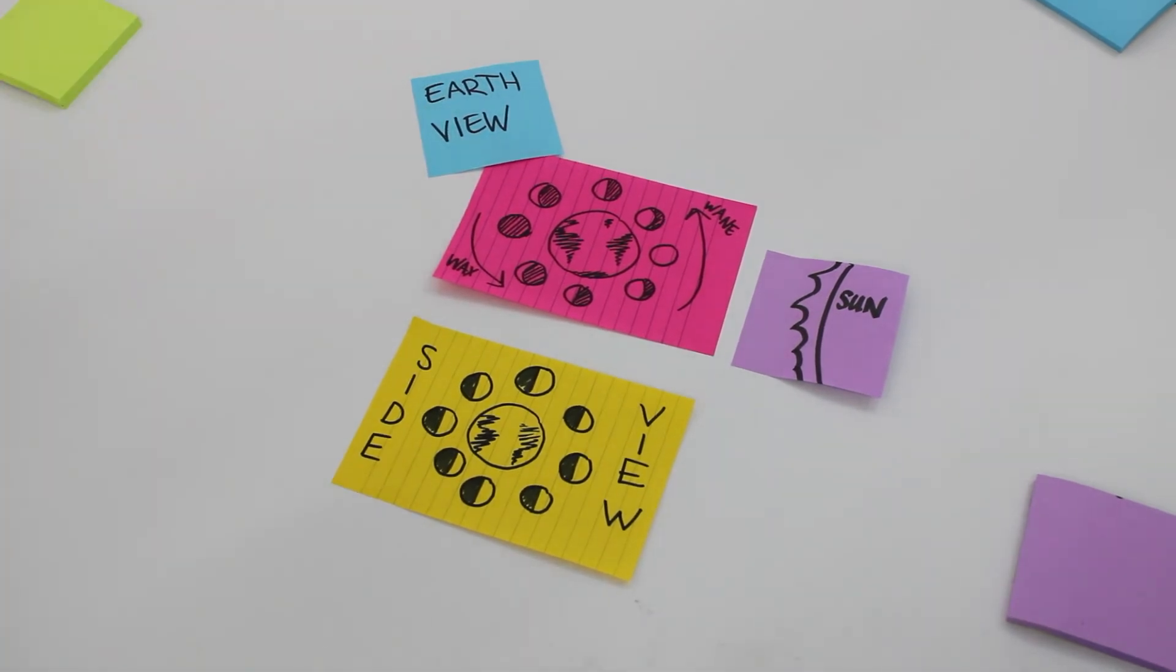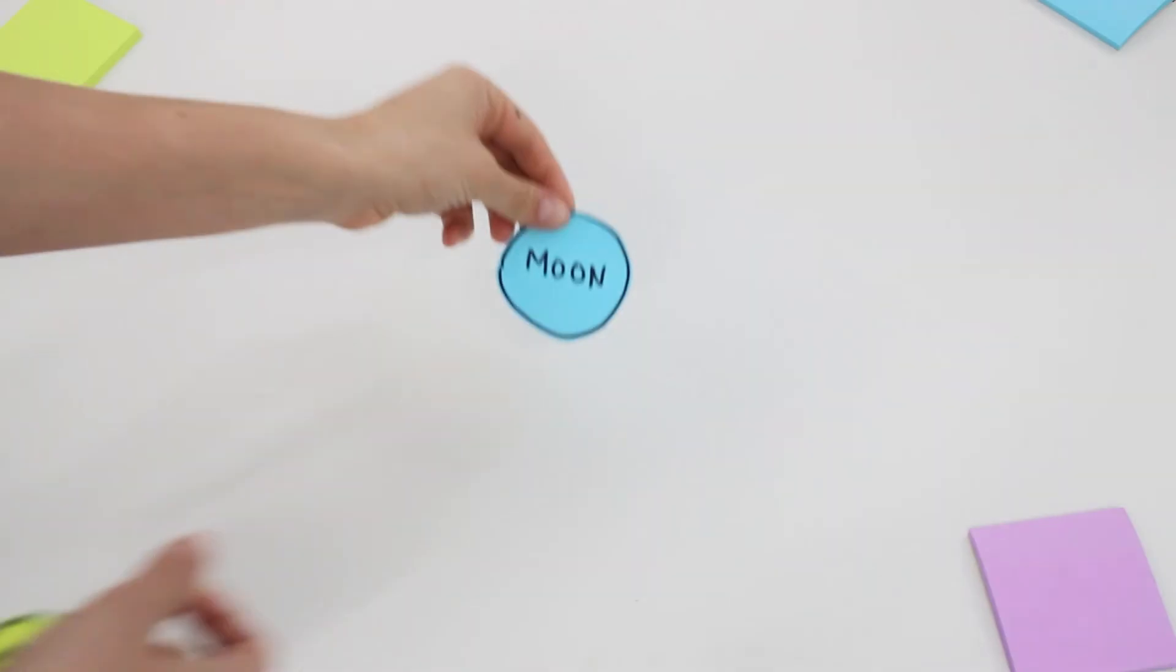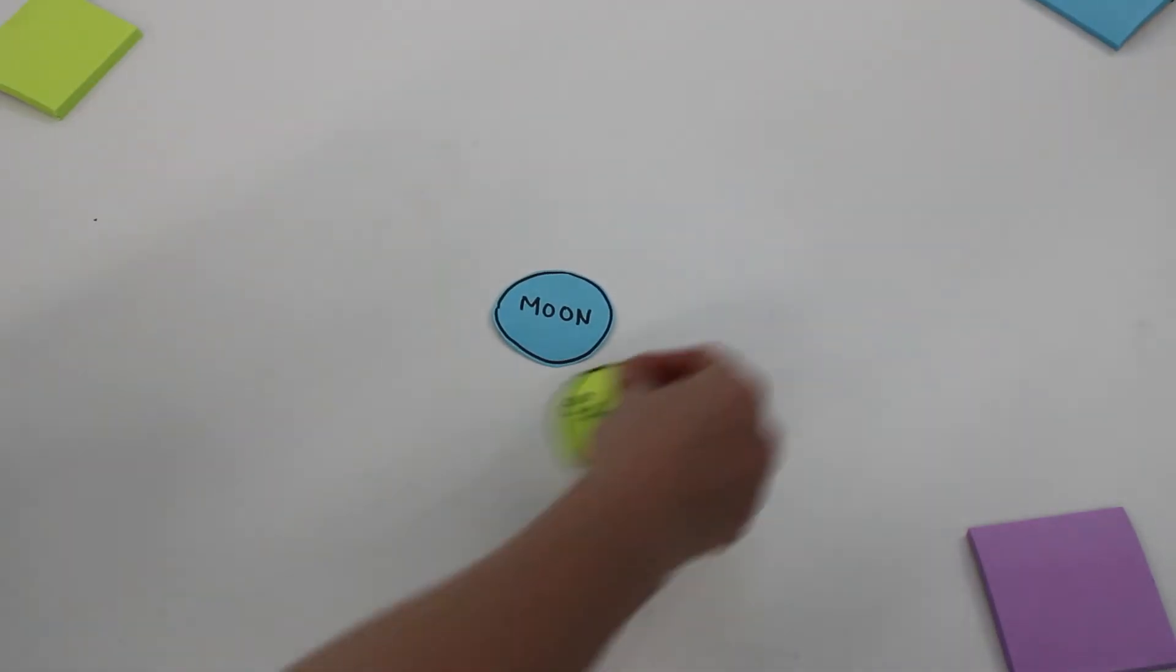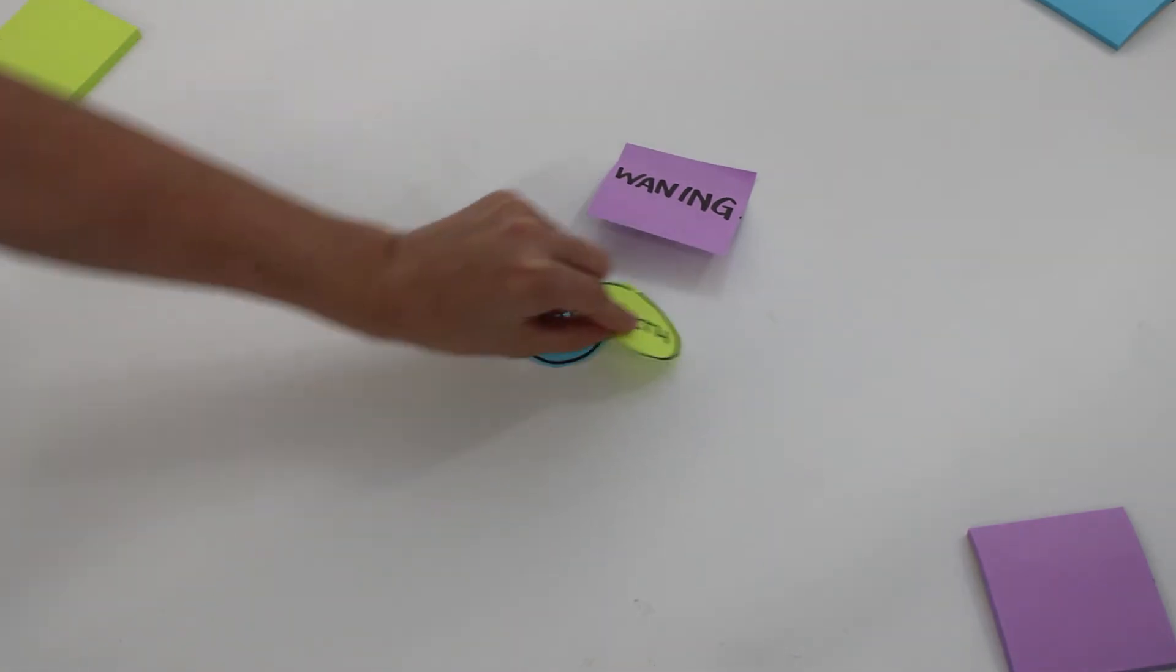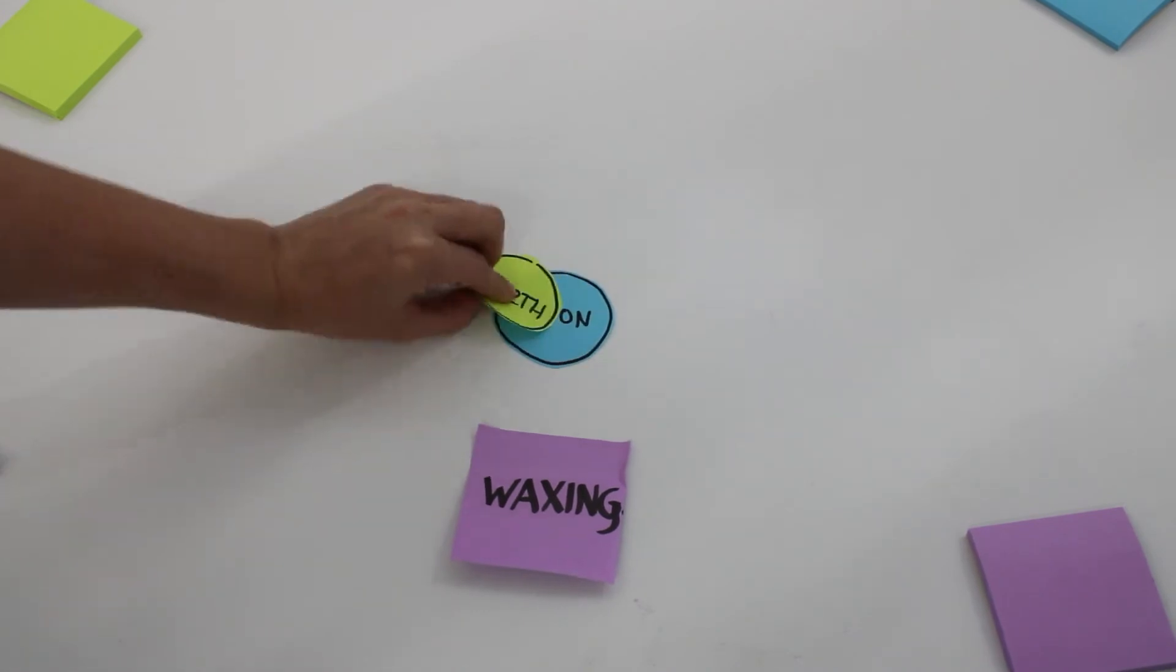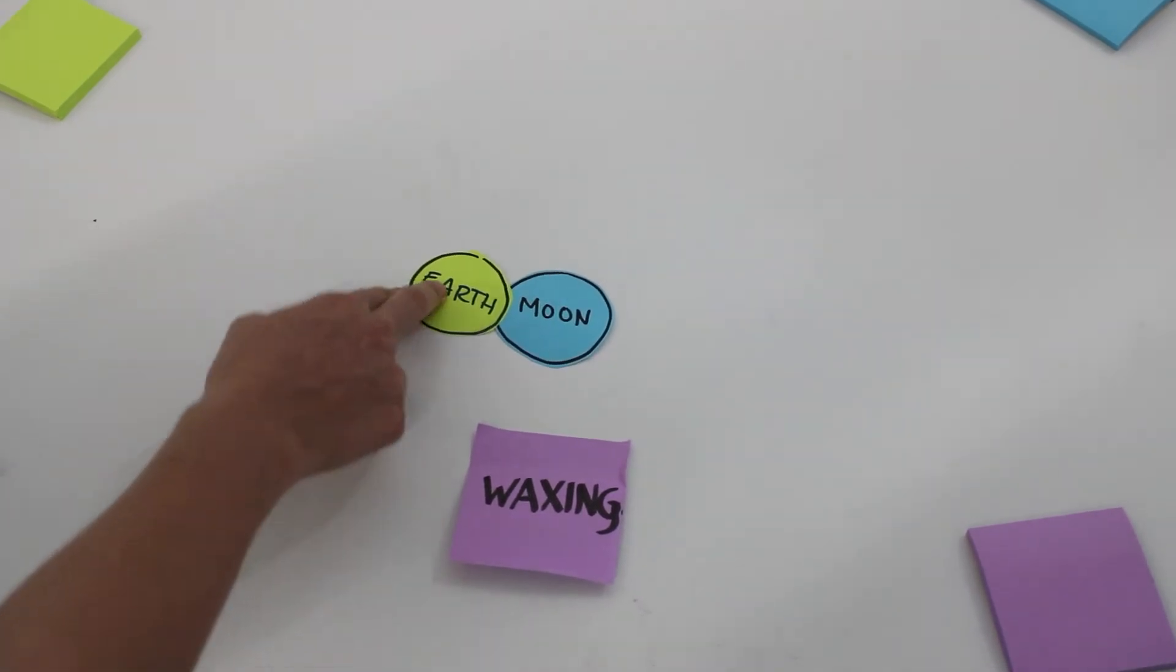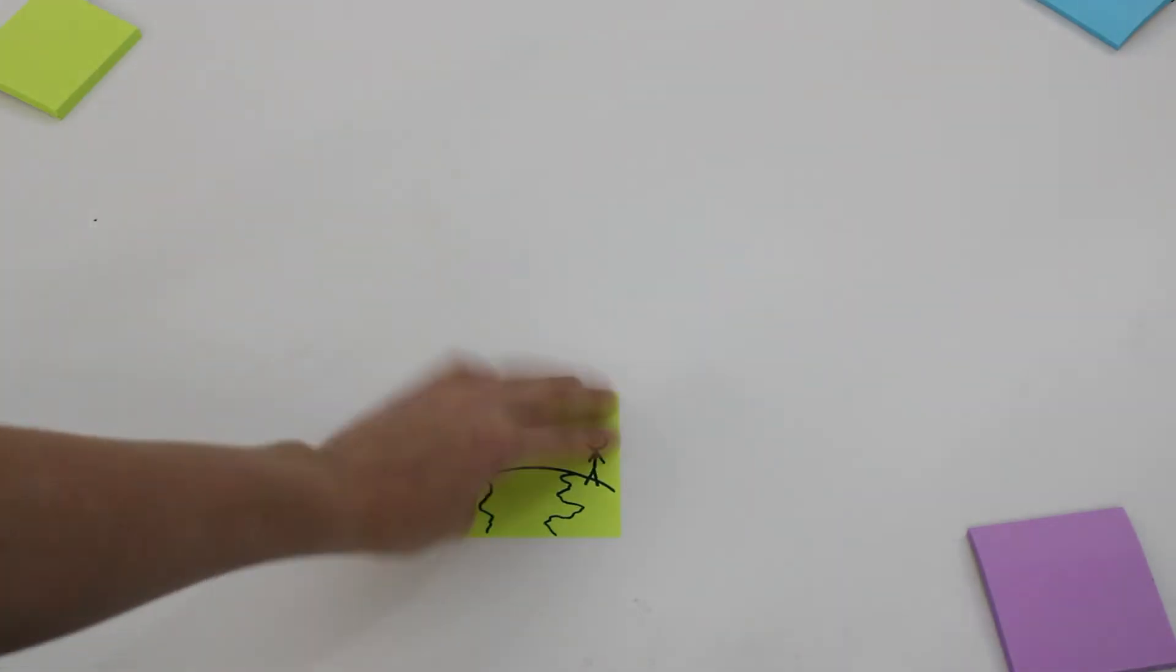When it's in front, we can't see any of the moon lit up at all. It looks totally dark from where we're standing, and we call this a new moon. But as it keeps rotating, the light begins to return sliver by sliver as a crescent moon. As it continues to revolve, we can see more of its light until it grows to a half moon, a gibbous, and once again a full moon.